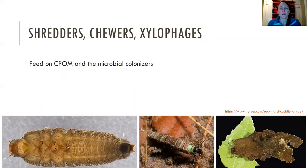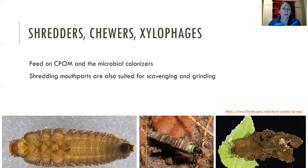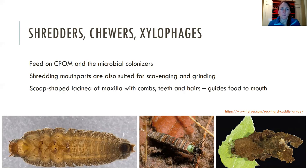Moving on to shredders — they're chewing. Some of them are xylophages that eat wood. These are organisms that feed on coarse particulate organic matter and the microbes that colonize it. They tend to have shredding mouth parts, shorter and stouter, kind of for cutting things. Their mouth parts are also suitable for scavenging and grinding. Some of them have scoop-shaped licinia of the maxilla with combs, teeth, and hairs that all kind of help guide food toward the mouth.